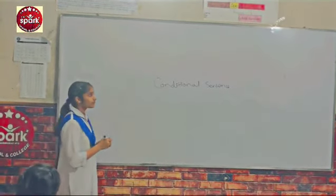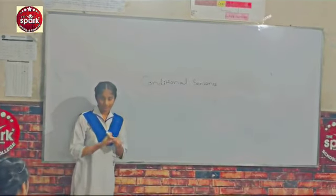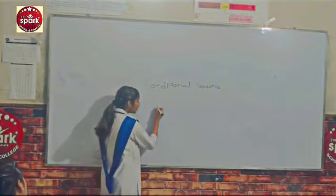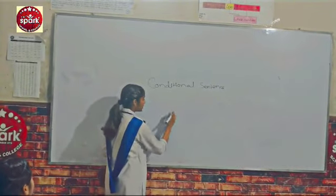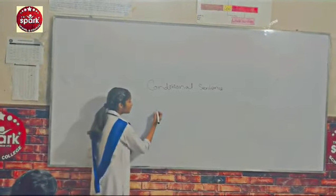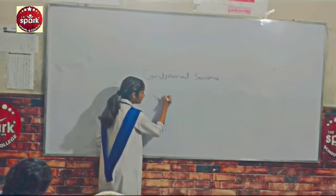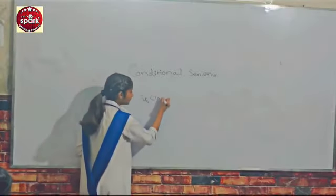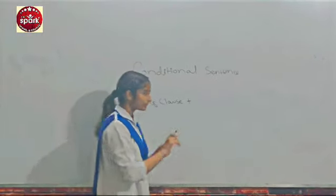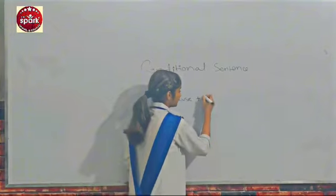A conditional sentence is mainly composed of two clauses. One is the subordinate clause and the other is the main clause. The subordinate clause contains the if-clause, and the main clause consists of the result clause.